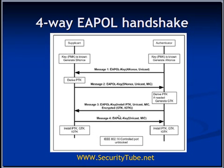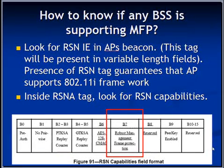After this successful 4-way ePol handshake, the supplicant and authenticator can independently install PTK, GTK, and IGTK into their state machines. This marks the end of IEEE 802.1X authentication. After this successful 1X authentication and 4-way handshake, management frame protection or MFP can take place. Now, a million dollar question: whether my AP supports MFP or management frame protection or not — how to know it?